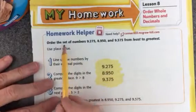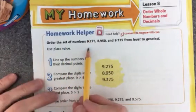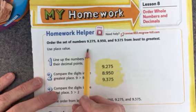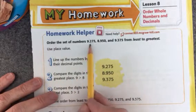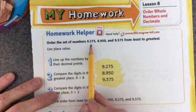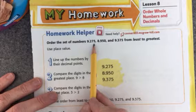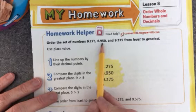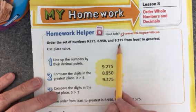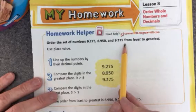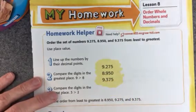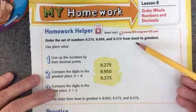Let's take a look at this homework helper section and just review how to order decimal numbers. So here I have a set of numbers, 9 and 275 thousandths, 8 and 950 thousandths, and 9 and 375 thousandths. And I'm going to order them from least to greatest.